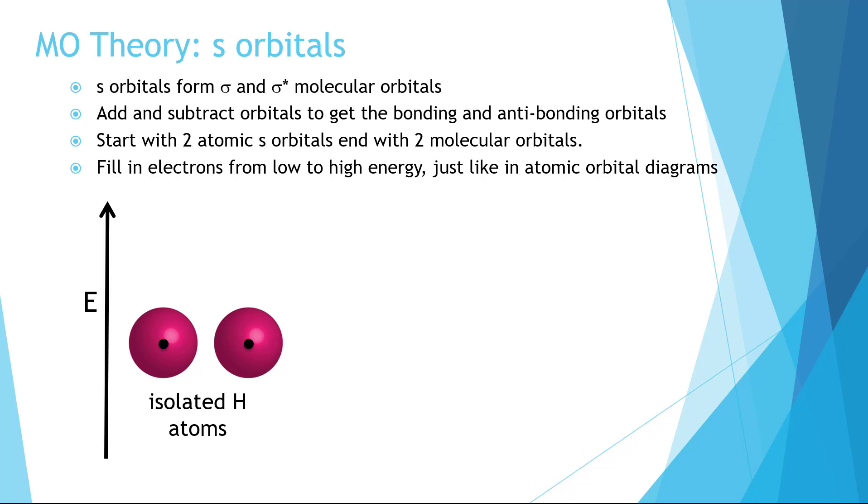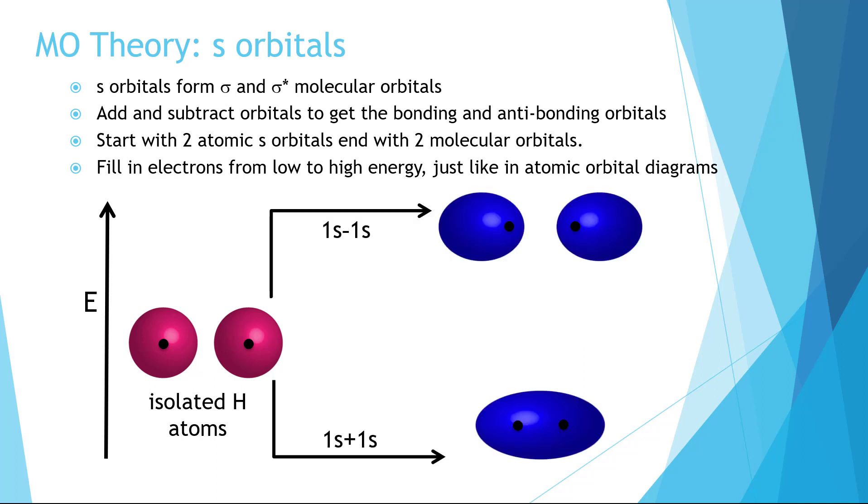Let's summarize that discussion with a few key take-home points. S orbitals combine in two ways to form sigma bonding orbitals and sigma star anti-bonding orbitals. We started with two atomic orbitals, and we formed two molecular orbitals. When looking at where the electrons go, we will fill low to high, just as we did when filling atomic energy level diagrams.